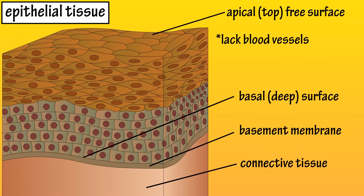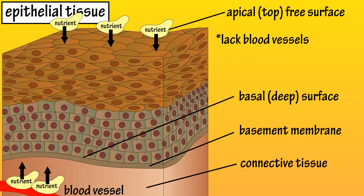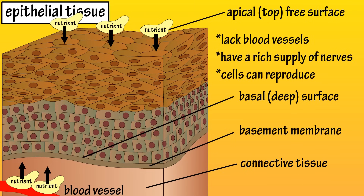They also lack blood vessels, which is called avascular, so they get nutrients from their apical free surface or by diffusion across their basal surface from the underlying connective tissue. Epithelial tissue is also innervated, which means that they have a rich supply of nerves, and epithelial cells can reproduce themselves, which is important because they go through severe wear and tear, such as in the skin and the respiratory and digestive tracts.